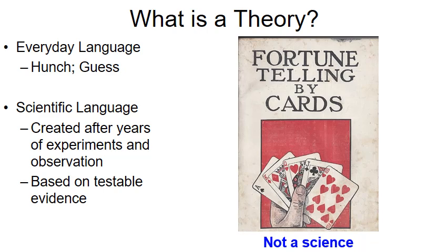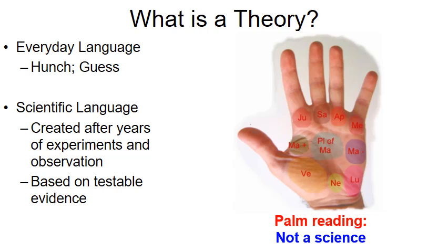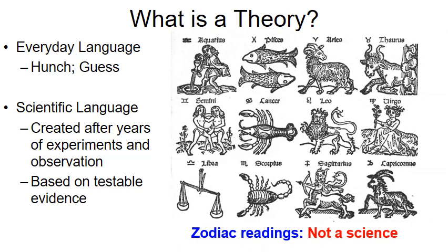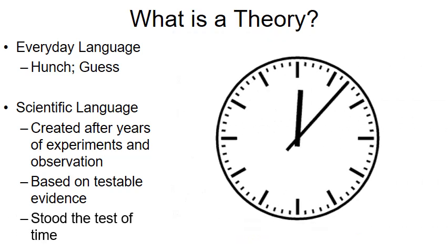For these reasons, fortune-telling, reading cards, and predicting the future are not sciences — they're not based on testable evidence. Palm reading is not science either, nor is reading your horoscope and the signs of the zodiac. People may look to their horoscope for guidance or entertainment, but by no means are these scientific theories.